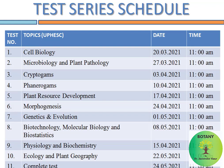Topics include: cell biology, microbiology and plant pathology, cryptogams, phanerogams, plant resource development, morphogenesis, genetics and evolution, biotechnology, molecular biology and biostatistics, physiology and biochemistry, ecology and plant geography. The 11th will be the complete test jis mein ki sare 10 topics is complete test mein include kar ke diya jayega.